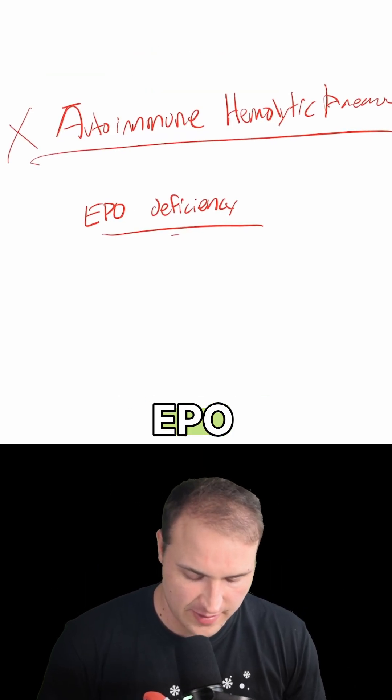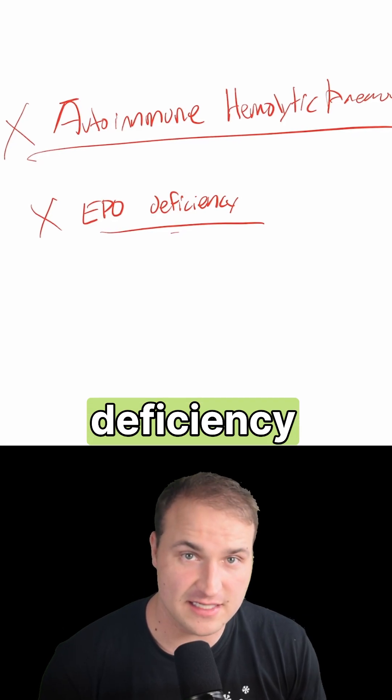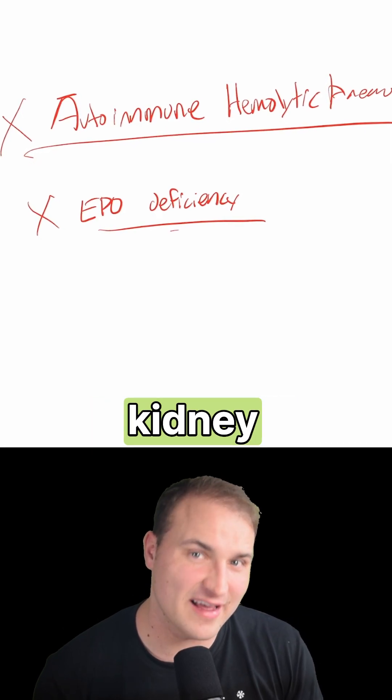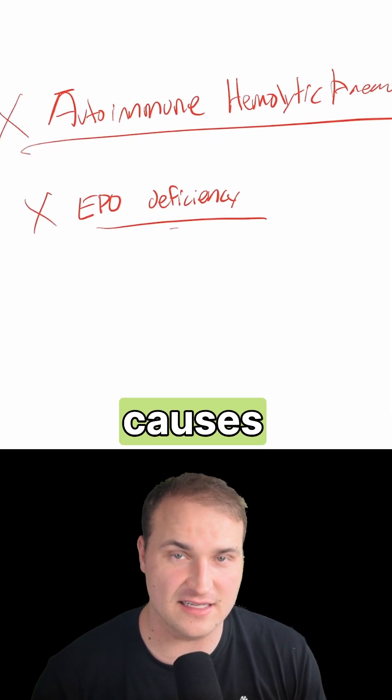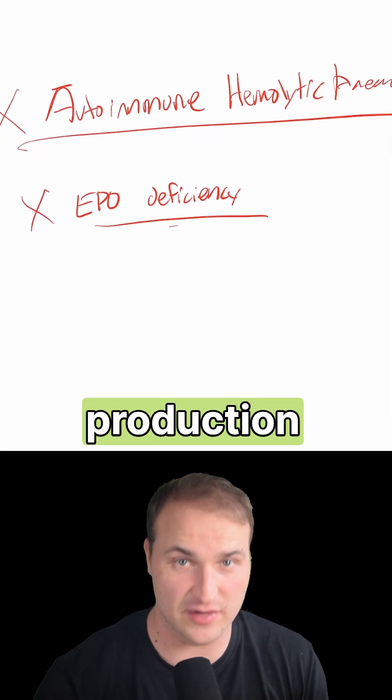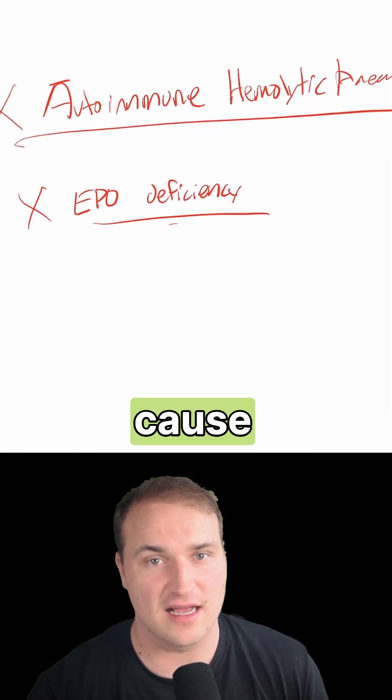They're also going to try to get you with EPO deficiency. That happens in chronic kidney disease and causes low red blood cell production. It does not cause schistocytes.